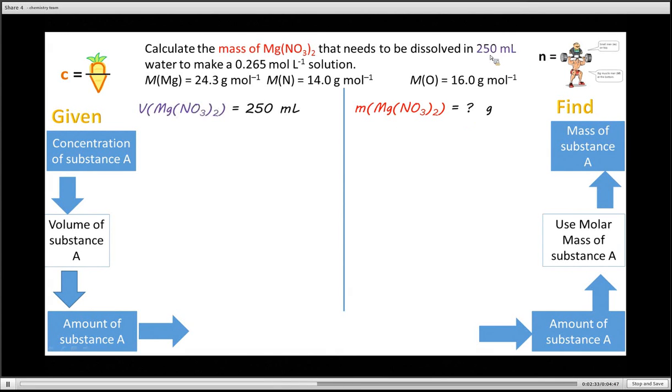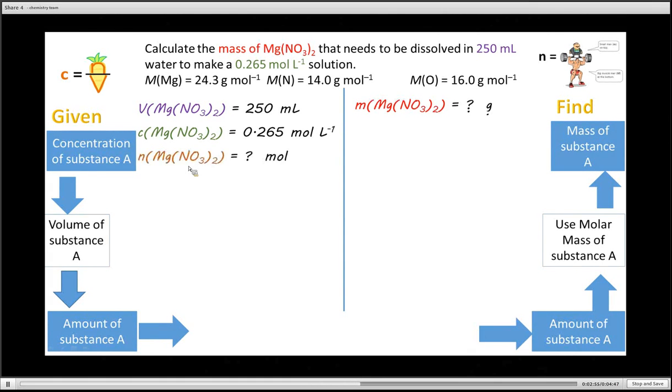And what else are we given? We are given a volume. Now notice it is in milliliters. And we are given a concentration. So to get from this side to that side, I always use the moles, the amount. And because I'm dealing with the same substance, I don't have to use a mole ratio. So I have to calculate now the amount. So I use this formula that we worked out just now. N is equal to C times V. Substitute into it.